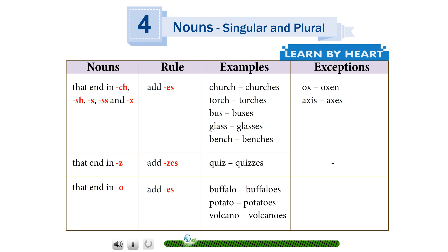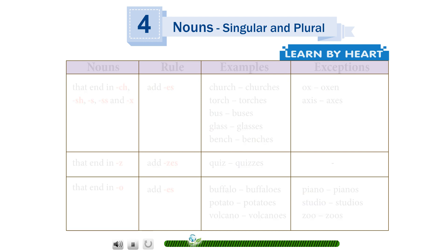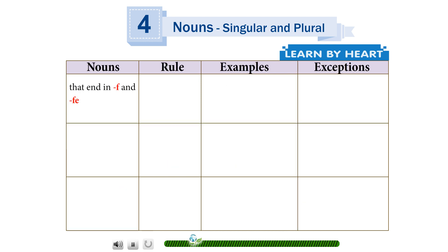buffalo becomes buffaloes, potato becomes potatoes, volcano becomes volcanoes. Exceptions: piano becomes pianos, studio becomes studios, zoo becomes zoos. That end in f and fe change the